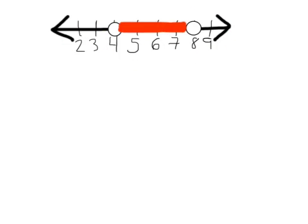So what we're going to do first is we need to establish what our home base is. Home base is the point that is exactly in the middle of our two boundary values. Here our boundary values are 4 and 8.